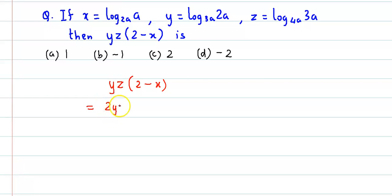This becomes 2yz minus, now yz into x is xyz. Now we substitute these values, so this will be 2 into...